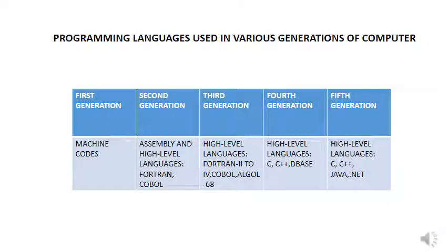In the fourth generation, high-level languages were also used: C, C++, DB2, and DBASE. And in the fifth generation, again high-level languages are used: C, C++, Java, and .NET.